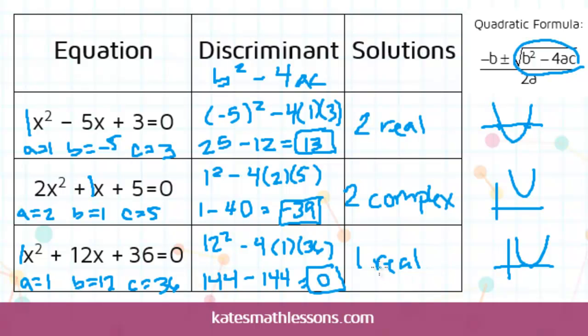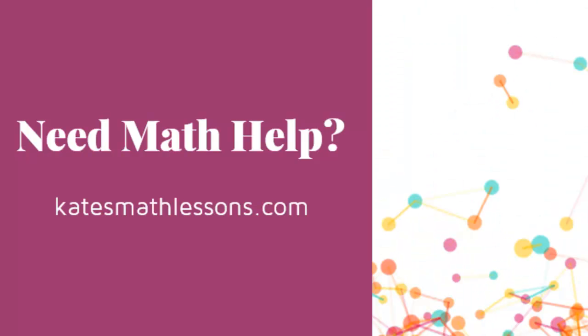So anytime your discriminant is 0, that means you have one real answer and one x-intercept.